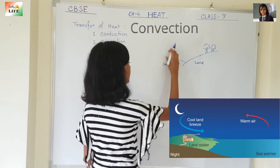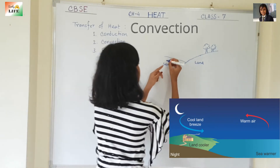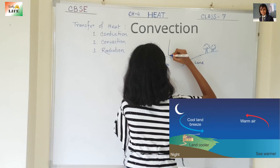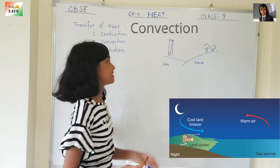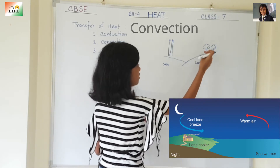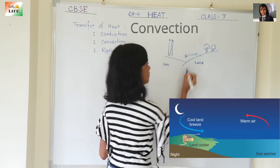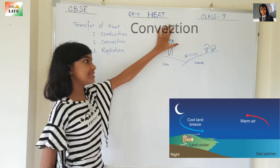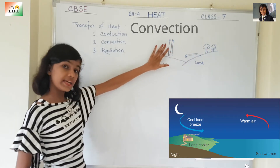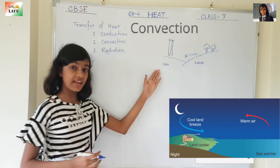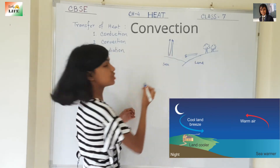Now, what happens? The air above the sea is still hot while the air above the land has cooled. So the hot air over the sea rises up, and the cold air over the land moves in to take its place. The air is now moving from the land to the sea, and this is known as land breeze because the air is moving from the land to the sea.